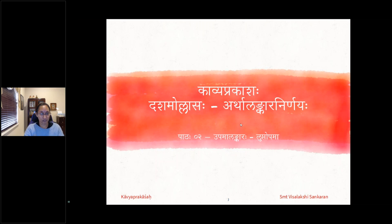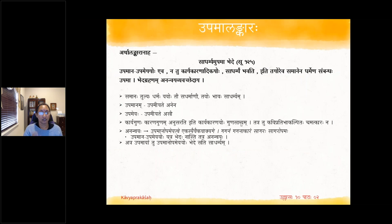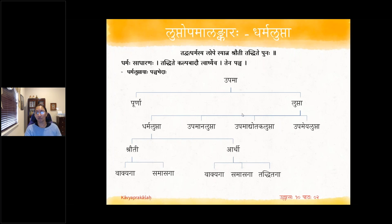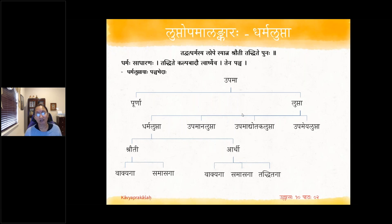We'll start now. We have to start with the definition of Upama. As we saw last week, it was a Sadharmyam where you have Upamana, and there is a Sadharana Dharma or Sadharmyam, along with Upama Vachaka Shabda or Upama Dhyotaka Shabda. Now we look at Lupta Upama. If any one, two, or three of these four items are missing, then it is called Lupta Upama. Lupta means missing.